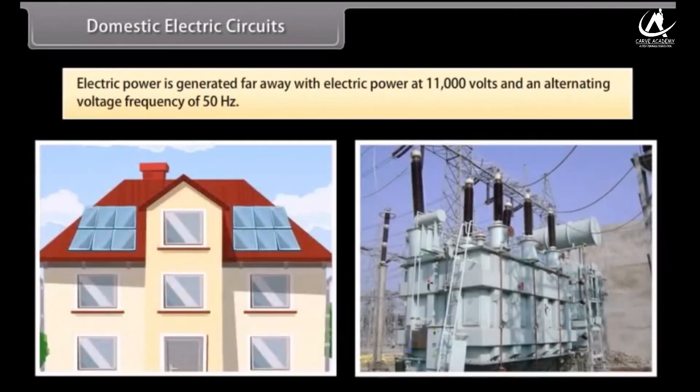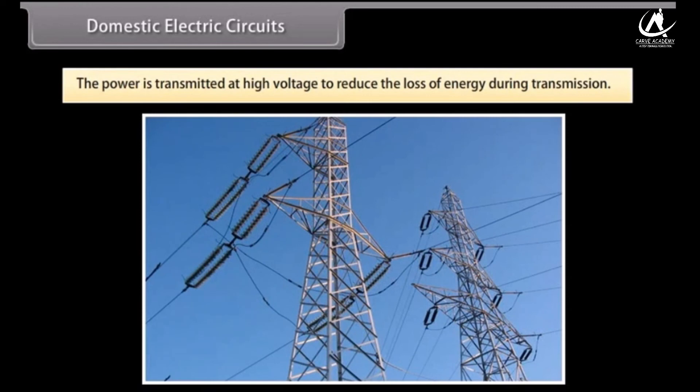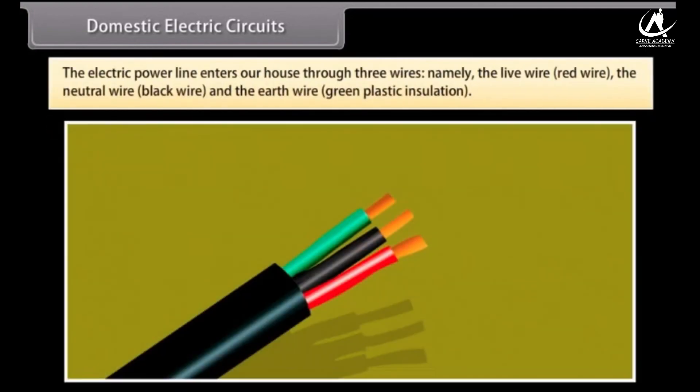Electric power is generated far away from the places it is consumed. At the generating station, the electric power is generated at 11,000 volts with an alternating voltage frequency of 50 hertz. The power is transmitted to the places of consumption at high voltage to reduce the loss of energy during transmission.